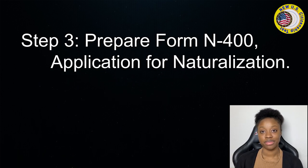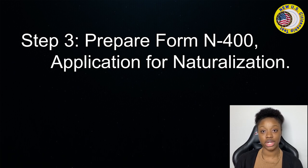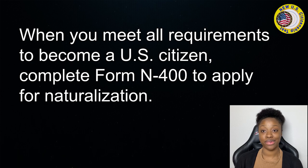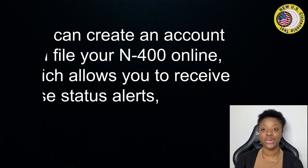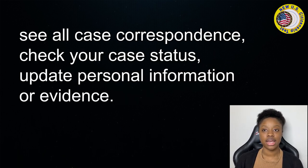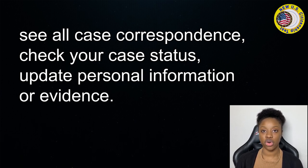Step 3: Prepare Form N-400, the application for naturalization. When you meet all requirements to become a U.S. citizen, complete Form N-400 to apply for naturalization. You can create an account and file your N-400 online, which allows you to receive case status alerts, see all case correspondence, check your case status, and update personal information or evidence.